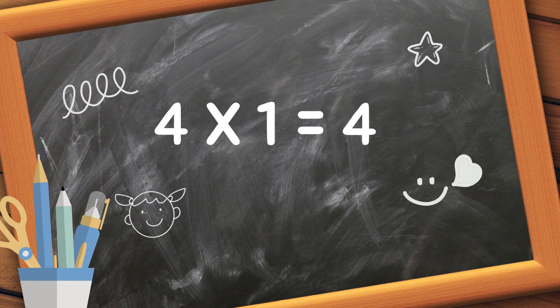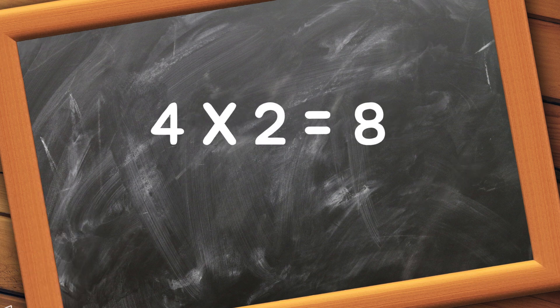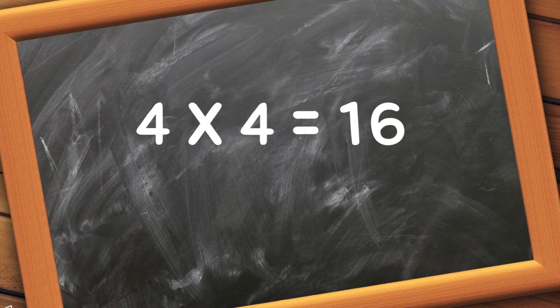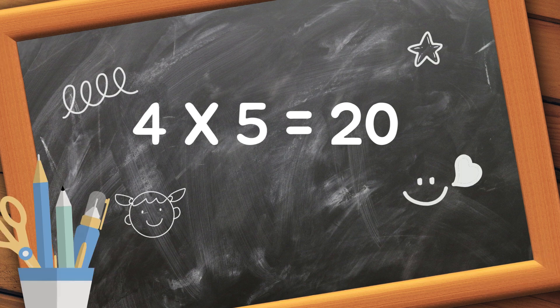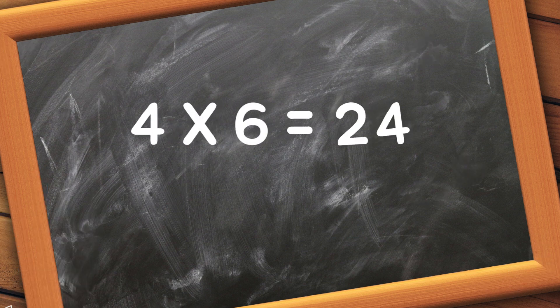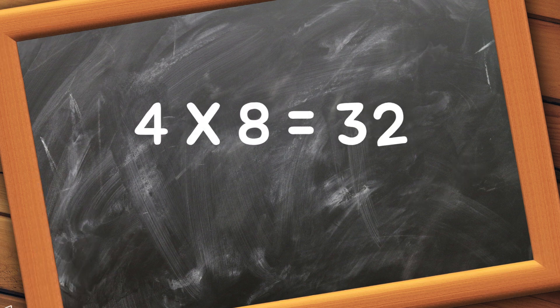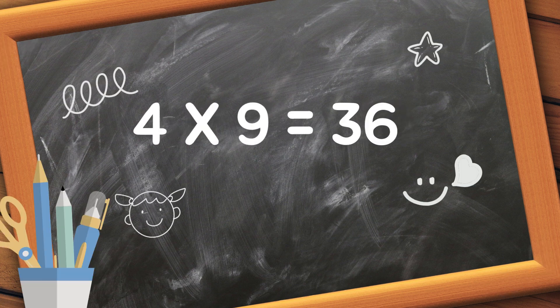Four one is 4. Four two is 8. Four three is 12. Four four is 16. Four five is 20. Four six is 24. Four seven is 28. Four eight is 32. Four nine is 36.